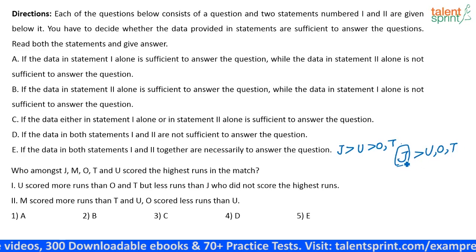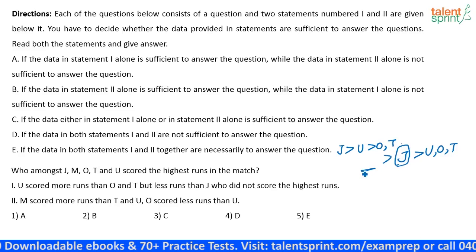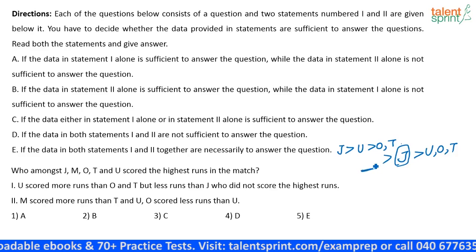And it is given that J is not scoring the highest. So, what does that mean? What does that mean? So, there is one person above J also. Yes. So, who has to be that person?